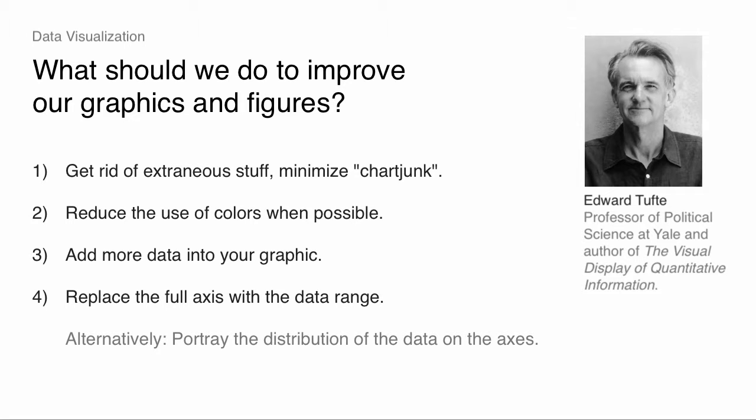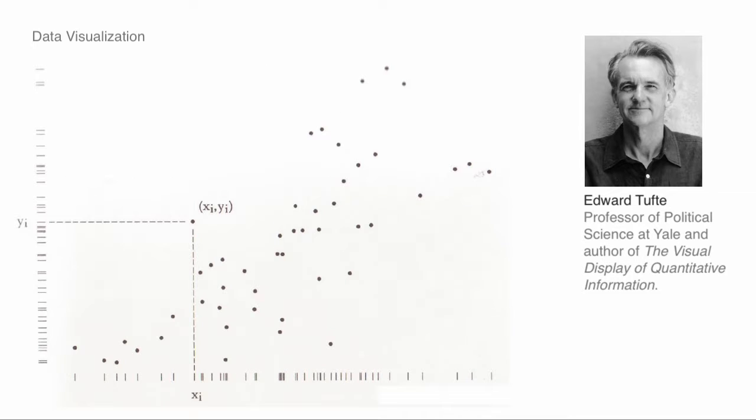There may also be simple ways of portraying the distribution of the data on the axes. Here's a scatter plot of X and Y, and what he has are tick marks wherever there's data. So now you have the univariate distribution of X and the univariate distribution of Y, and you can just see it visually.